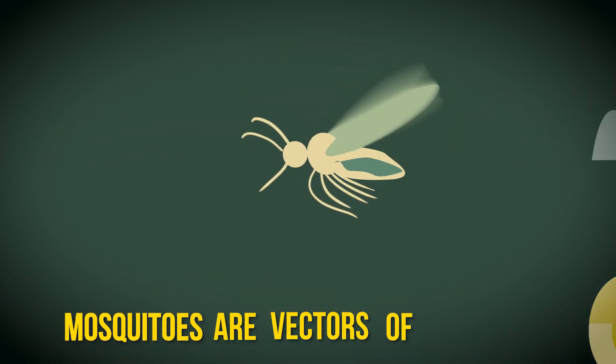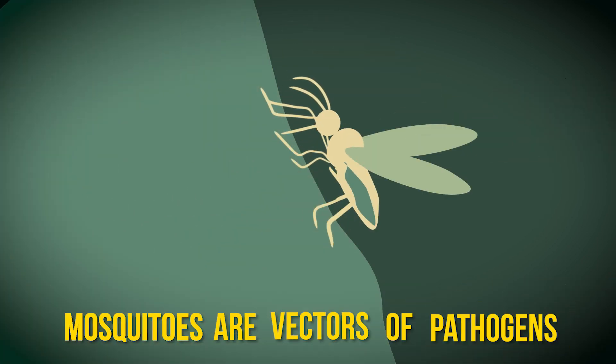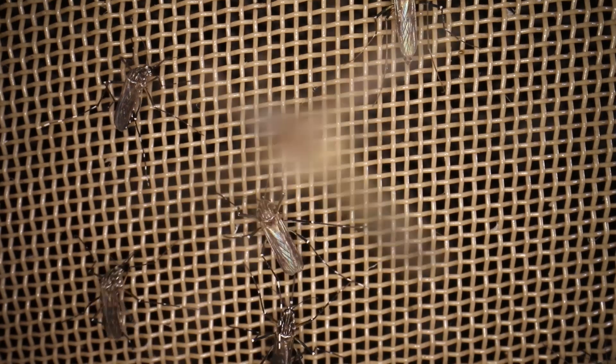Mosquitoes are vectors of pathogens — organisms that cause disease. But what does that mean for people, and how do we detect those pathogens? To understand all of this, we first have to understand the mosquito.